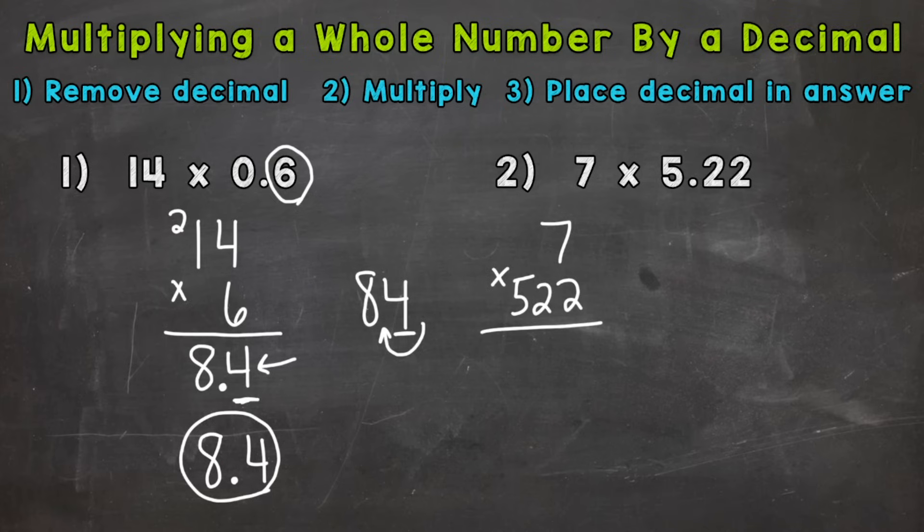Now, when it comes to multiplication, we want the number with more digits on top. We can solve it like this, but it's much easier to have the number with more digits on top. So we can actually do 522 times 7. And that's because multiplication is commutative. You'll get the same answer either way. 7 times 522 or 522 times 7.